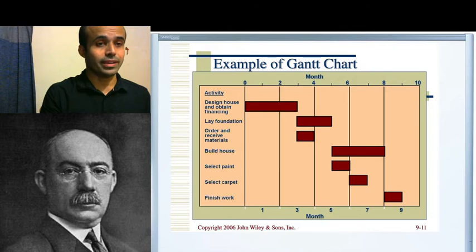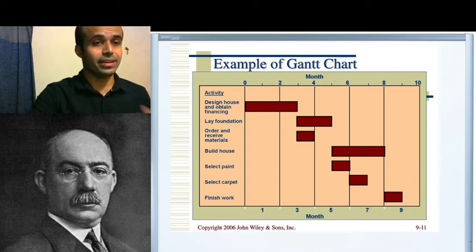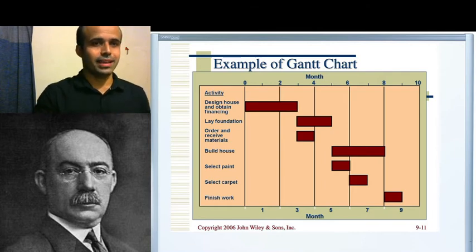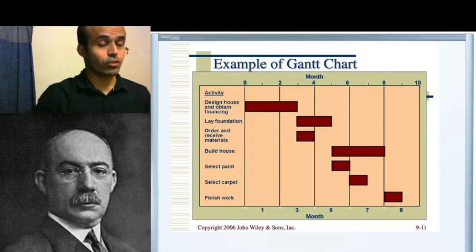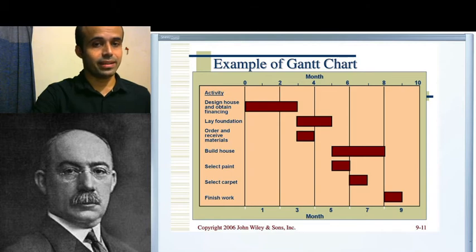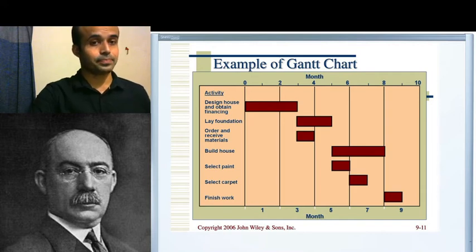This is one type of technique of controlling. You can see the months indicated under the chart — which month and which task will start is shown in the picture. Before starting the construction, you have to draw this Gantt chart. And when the construction work is going on, you have to follow this Gantt chart — when the design will stop, when the layout foundation will be finished. For example, after three months, the design house and obtain financing will be done.